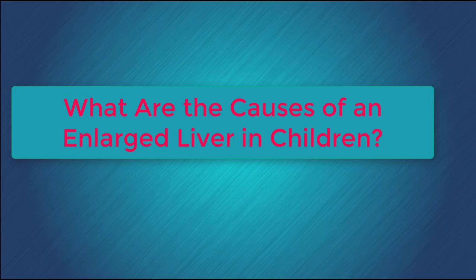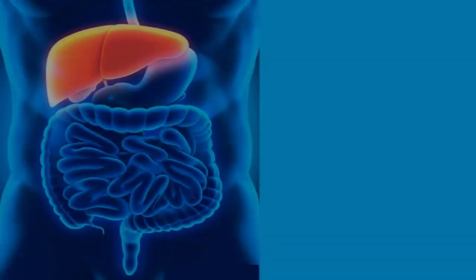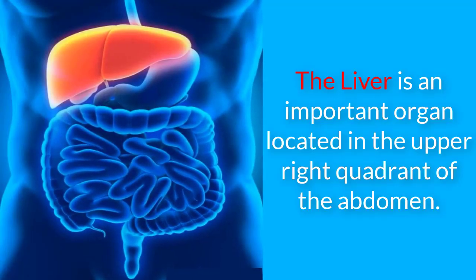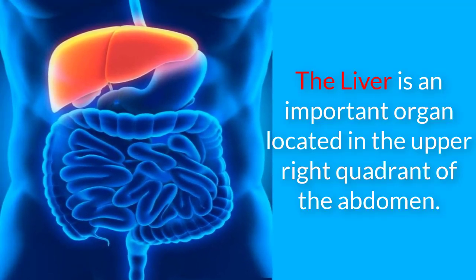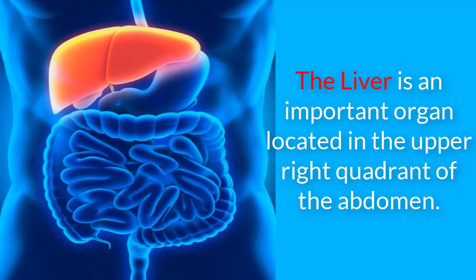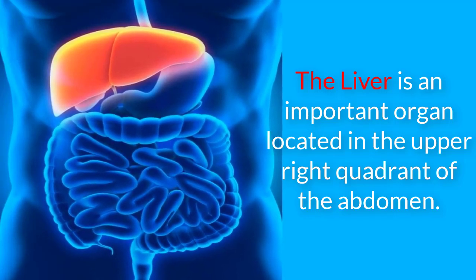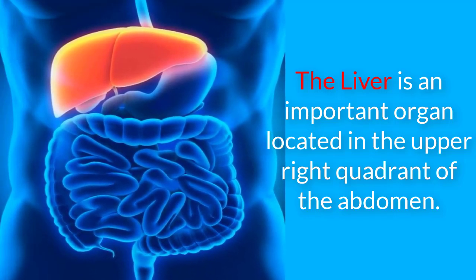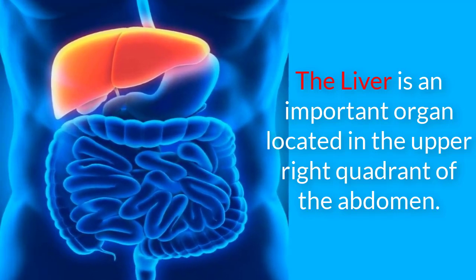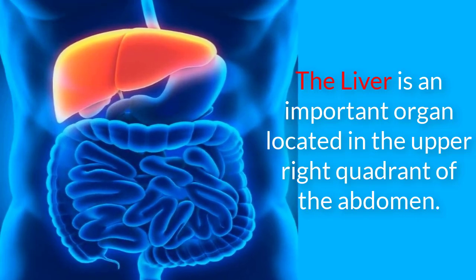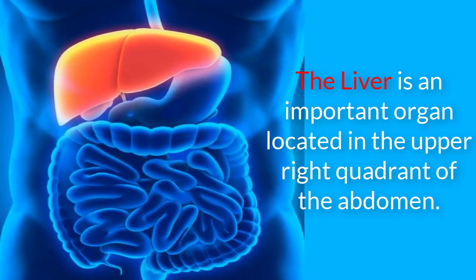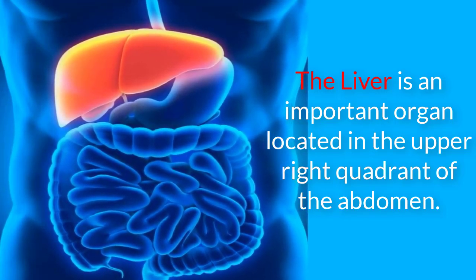What are the causes of an enlarged liver in children? The liver is an important organ located in the upper right quadrant of the abdomen. Its functions include producing proteins that are important for blood clotting, processing fats, storing sugar for energy use, and filtering the blood of waste products and metabolizing ingested medications.